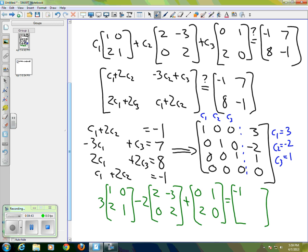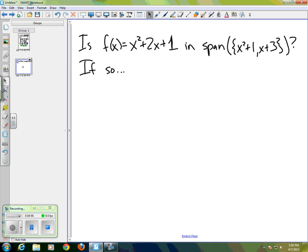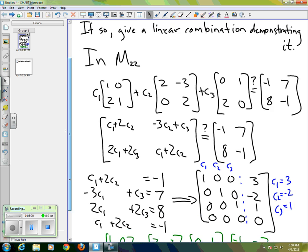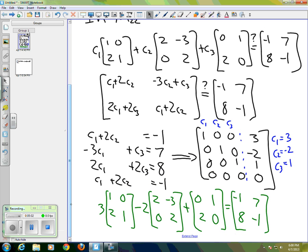equals the desired result, which is [-1, 7; 8, -1]. So the matrix that we were interested in is, in fact, in the span of the set of the other three matrices. Okay, sorry about that. Should have dwelled on that for a moment more. And there's an equation demonstrating that it is, in fact, in the span.